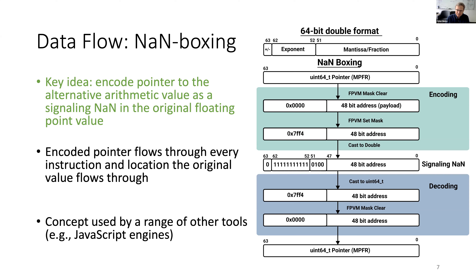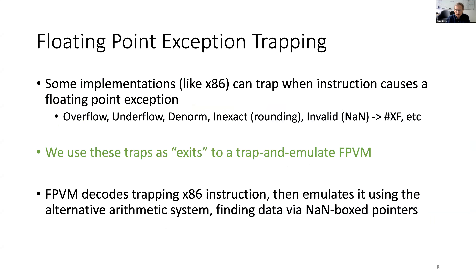Essentially, because there are so many representations of NANs, we can steal NANs to represent pointers. To do virtualization, we also need a way of exiting to the virtual machine monitor. What we do is hijack the fact that some implementations of IEEE floating point — such as on x86 — can trap when an instruction encounters an exception. These are the five standard exceptions defined in the IEEE standard, and when we see one of these trapped instructions, we emulate it.